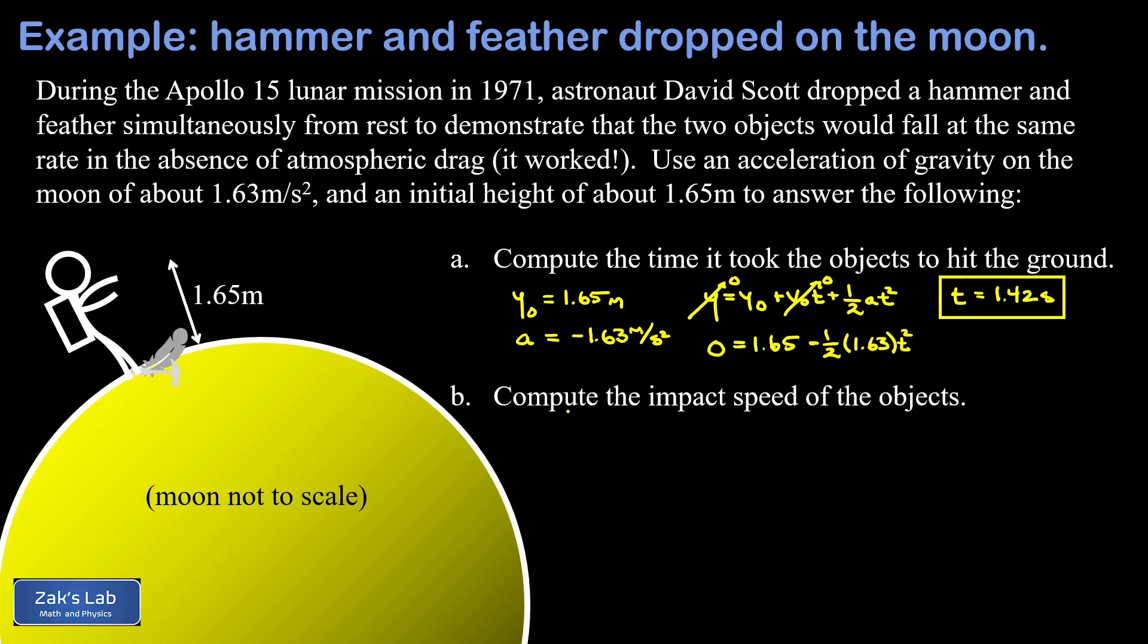Now we're going to follow this up by finding the impact speed when these objects hit the ground. To do that, we can look at the velocity as a function of time, v equals v-naught plus at.